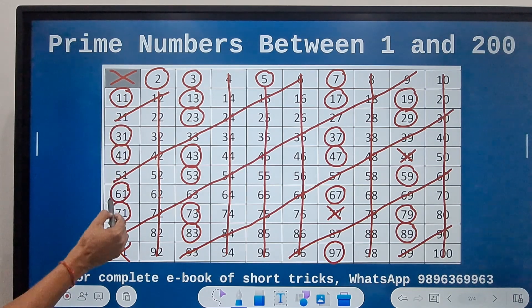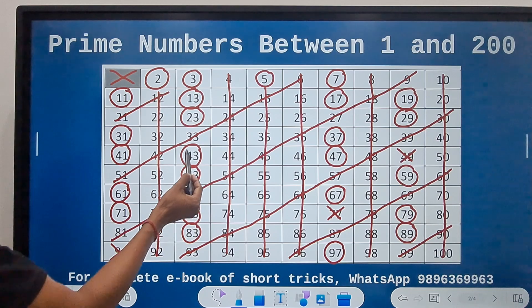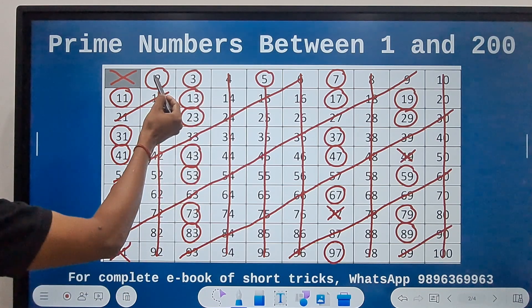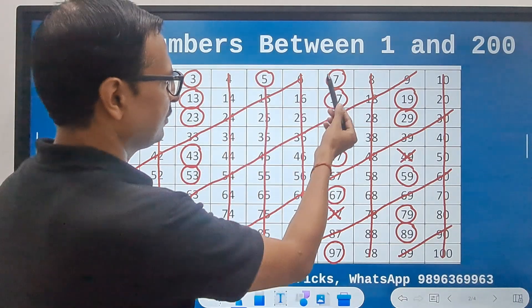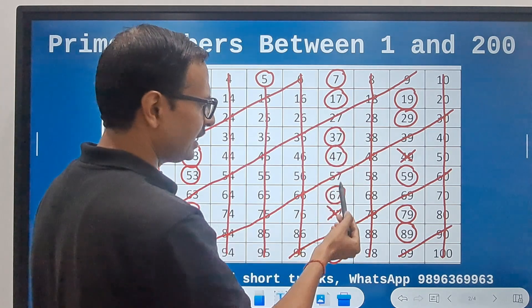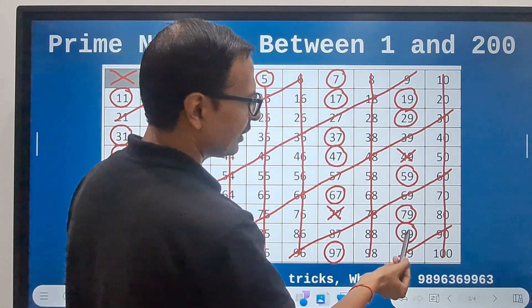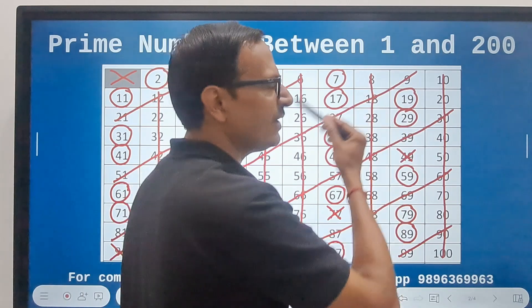We have 97, and that's it. So let's count: 1, 2, 3, 4, 5, 6, 7, 8, 9, 10, 11, 12, 13, 14, 15, 16, 17, 18, 19, 20, 21, 22, 23, 24, 25.